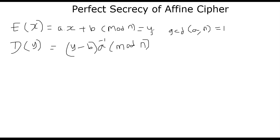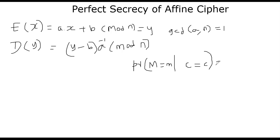In order to prove this is perfectly secure, I'm going to argue we can approach it in multiple steps. First step is to show you a simple Latin square representation of affine cipher. Just recall: in order to prove something is perfectly secret, all we have to do is convince ourselves that the probability of some ciphertext C being shown, where C is a ciphertext random variable, and we want the probability that the message is m given the ciphertext is c, equals the probability that the message is m.